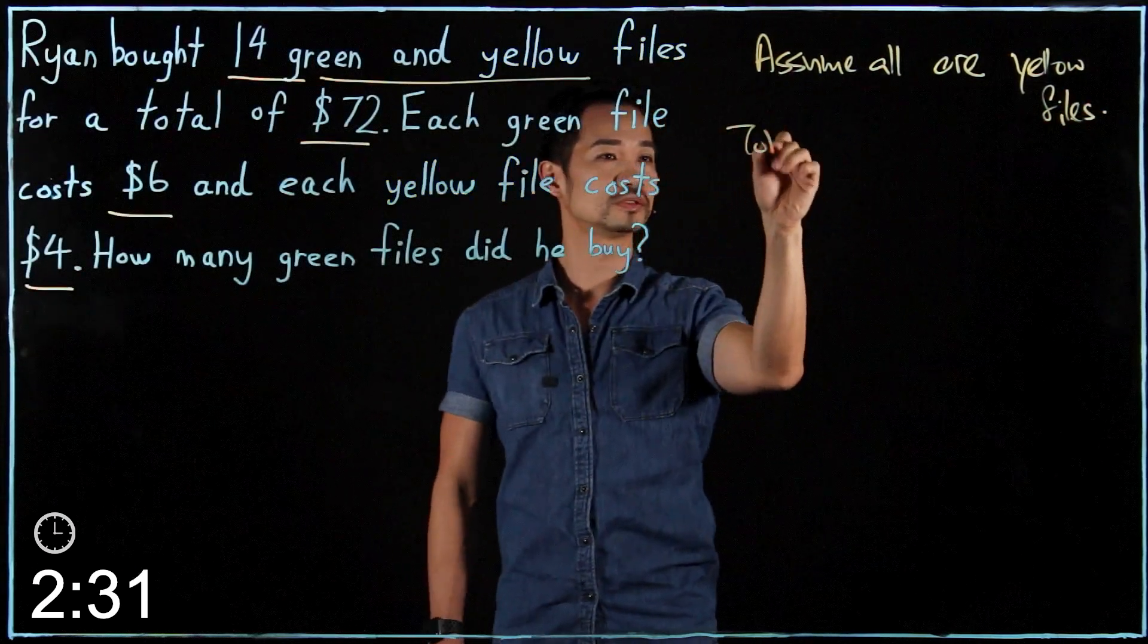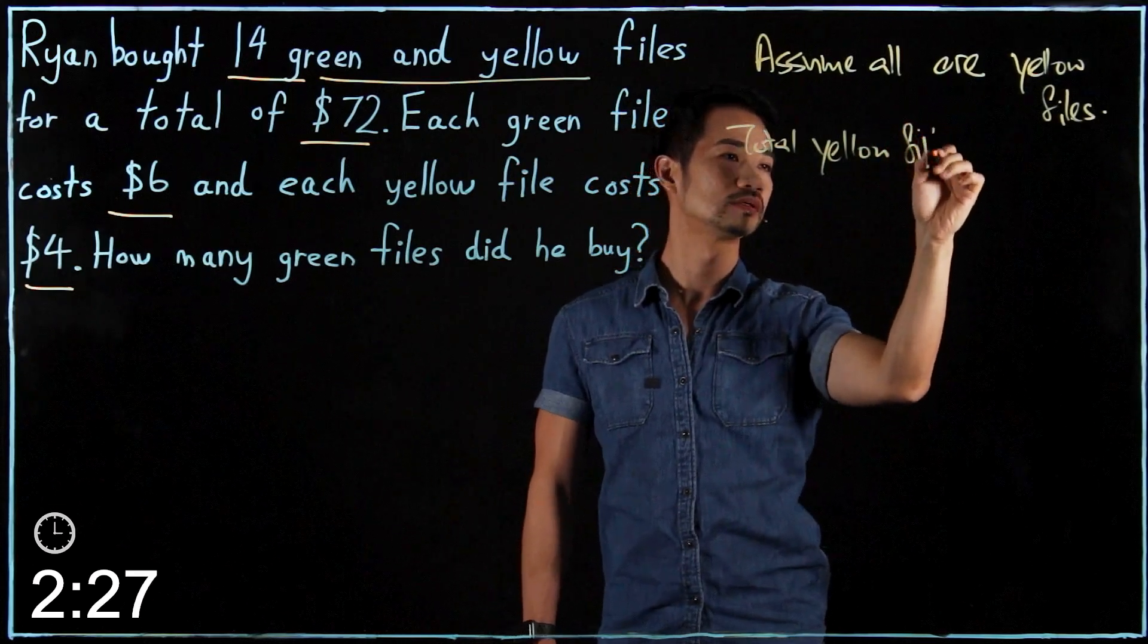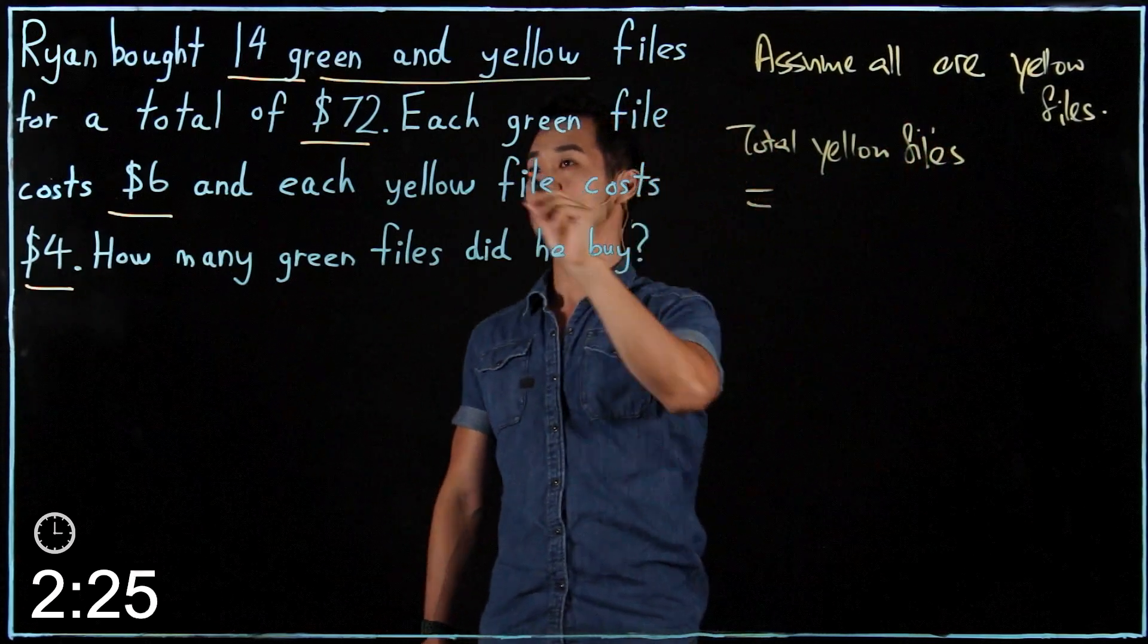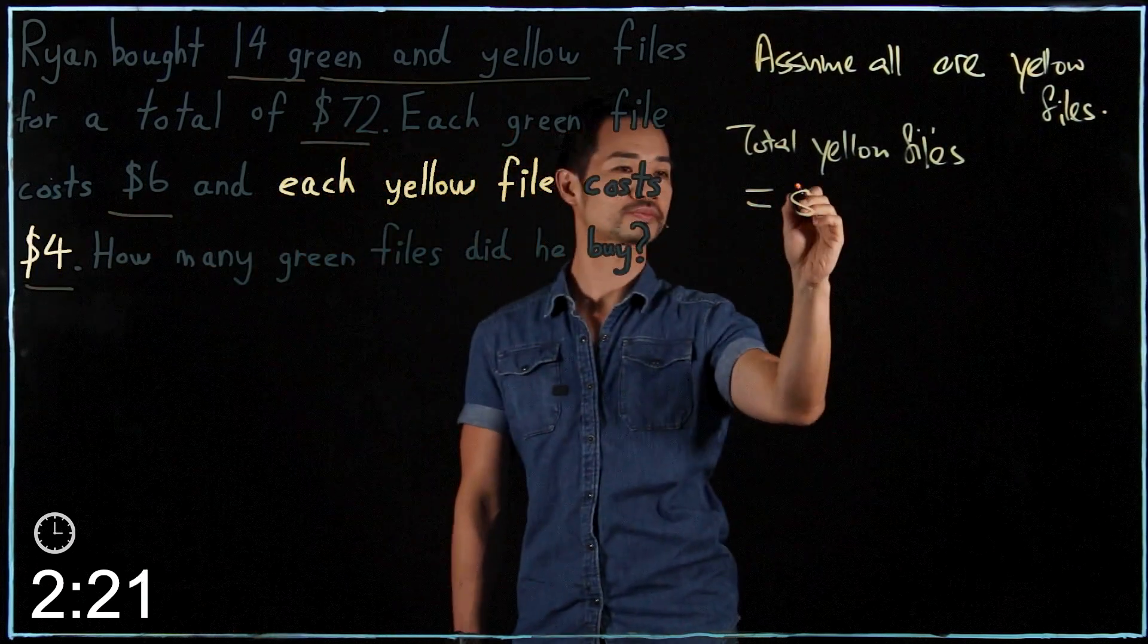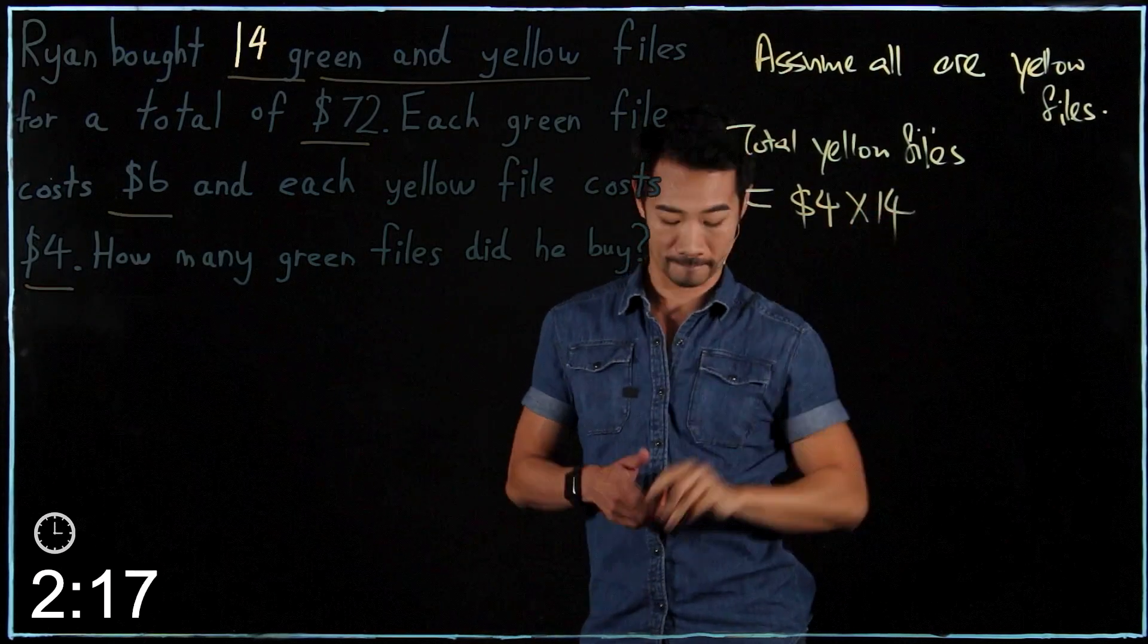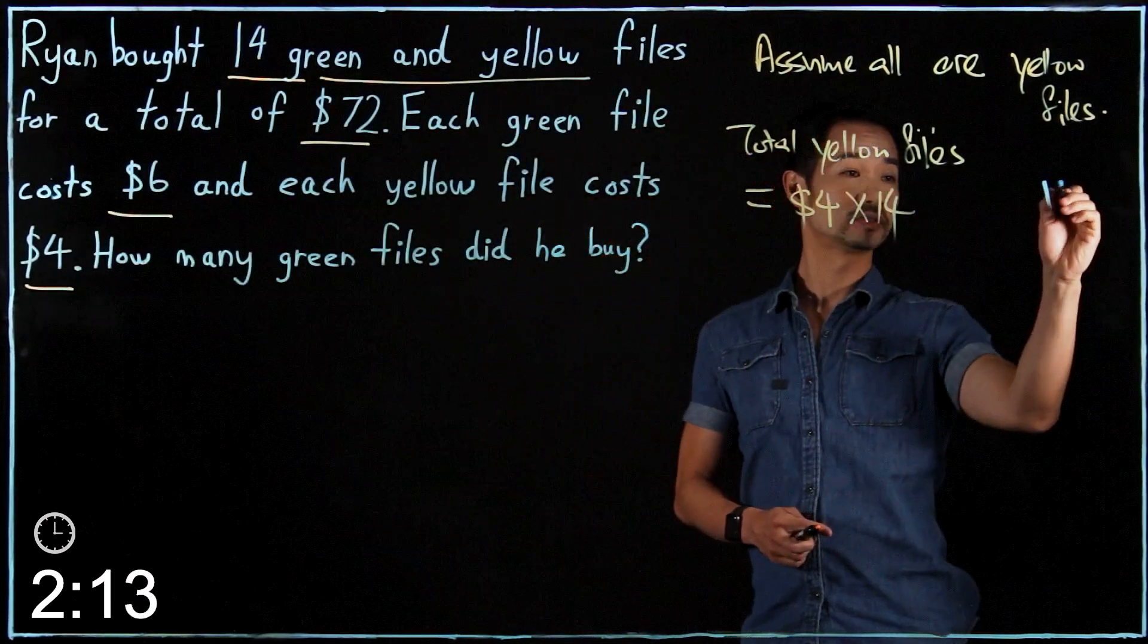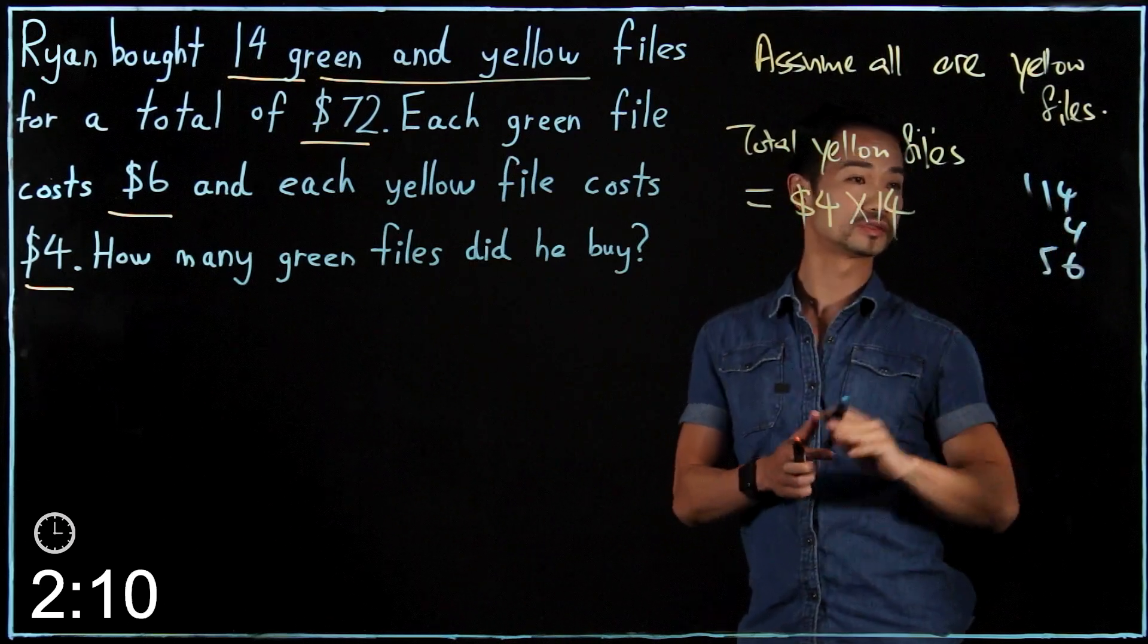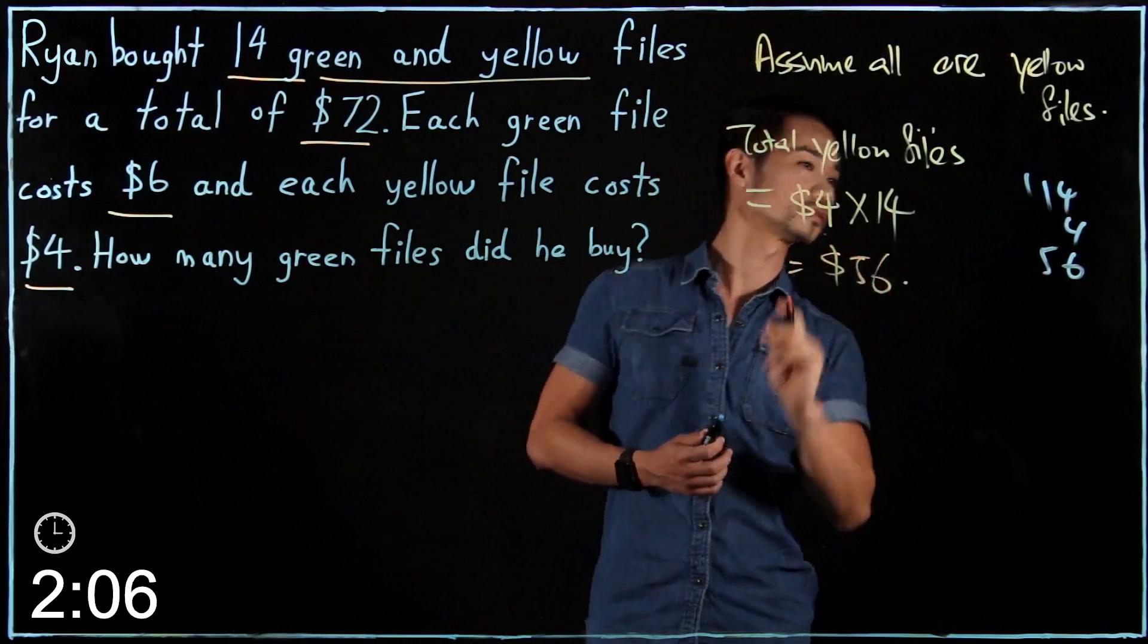Okay, so total yellow files will cost, since yellow is $4, all of them is 14. And this will be 14 times 4, which equals $56.